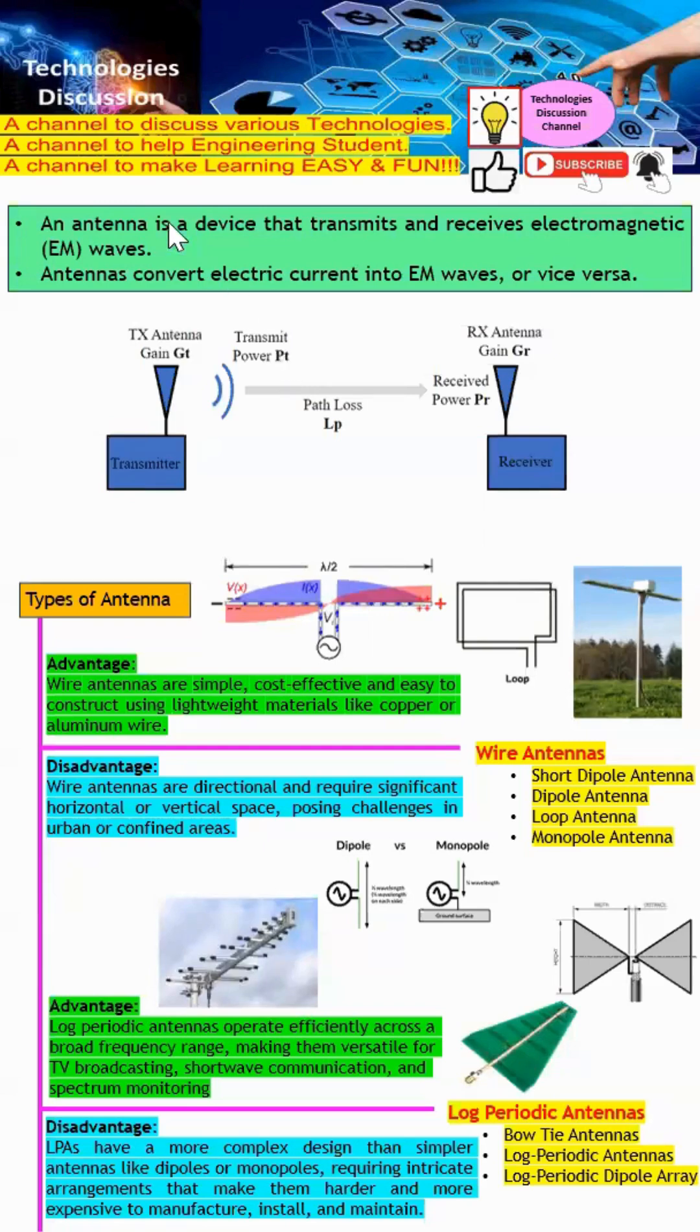Welcome to Technologies Discussion Channel. An antenna is a device that transmits and receives electromagnetic waves. In short, antennas convert electrical signals into EM waves or vice versa.